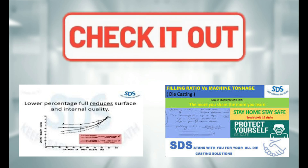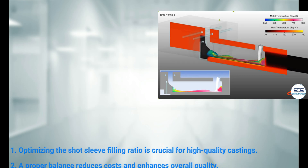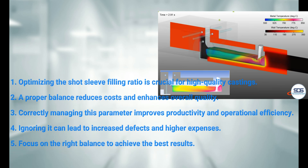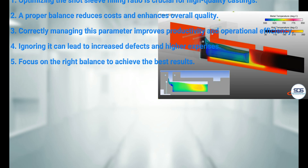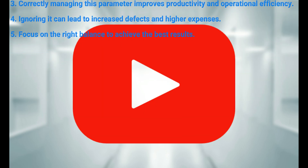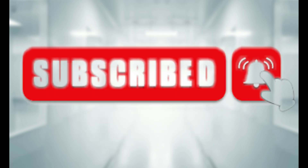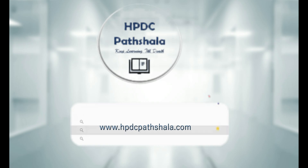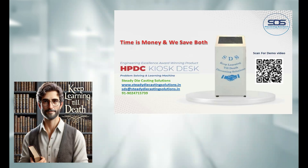As you can see, optimizing the short sleeve filling ratio is critical for achieving high quality casting and efficient operations. Balancing this parameter will help you reduce cost, improve quality, and increase productivity. If you found this video helpful, hit the like button, share it with your friends, and subscribe to the channel. Don't forget to visit hpdcparshala.com for more in-depth learning and community support. Until next time, keep learning!